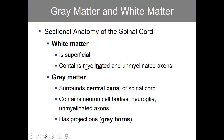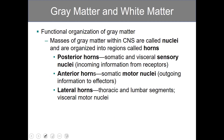Gray matter is more centralized in the spinal cord. It contains mainly cell bodies, neural glia, and unmyelinated axons. It is divided into projections called gray horns. Masses of gray matter in the central nervous system are called nuclei, and they are organized into regions called horns, of which there are three: the posterior horns, one on either side, the anterior horns, and the lateral horns.